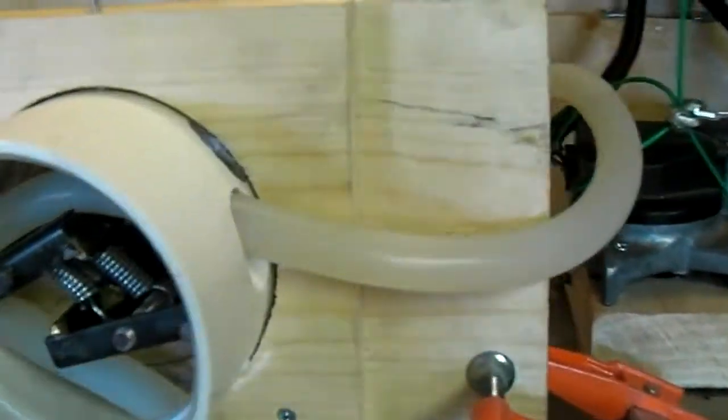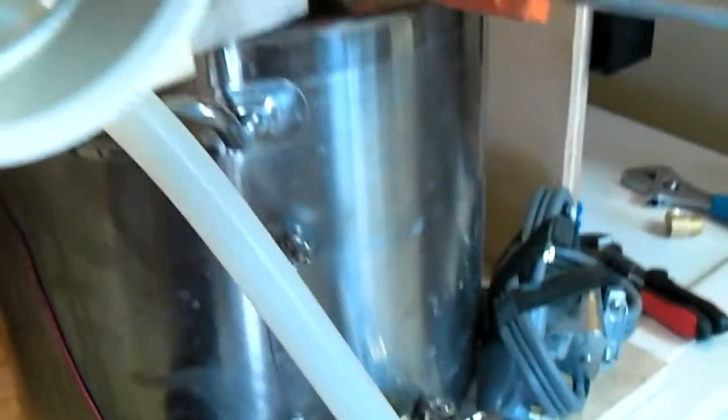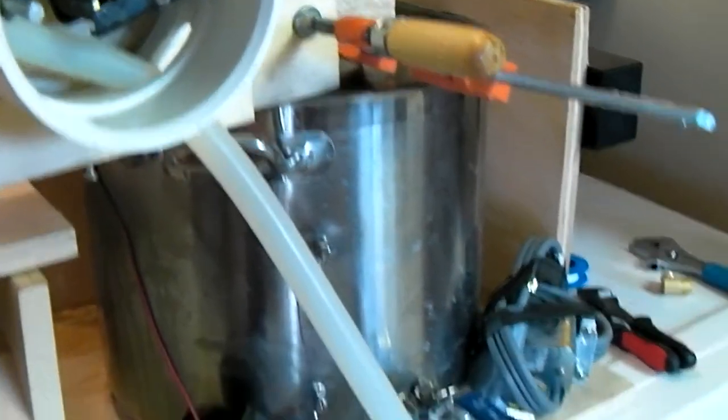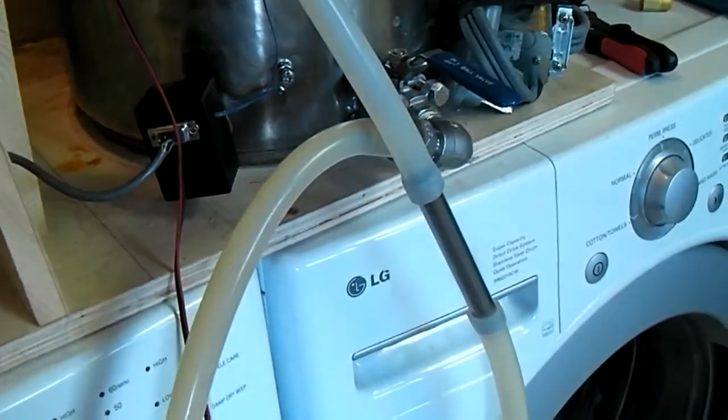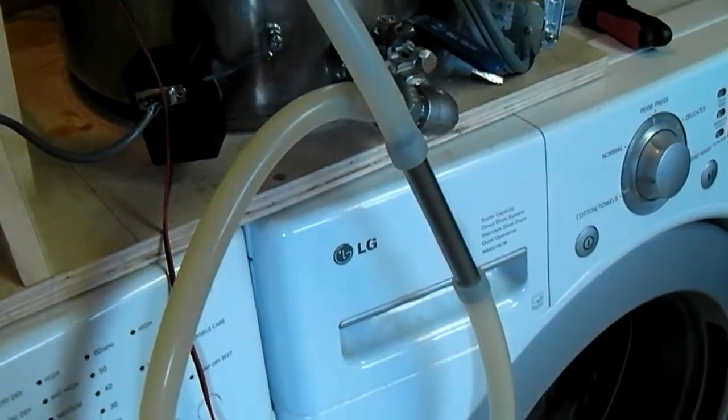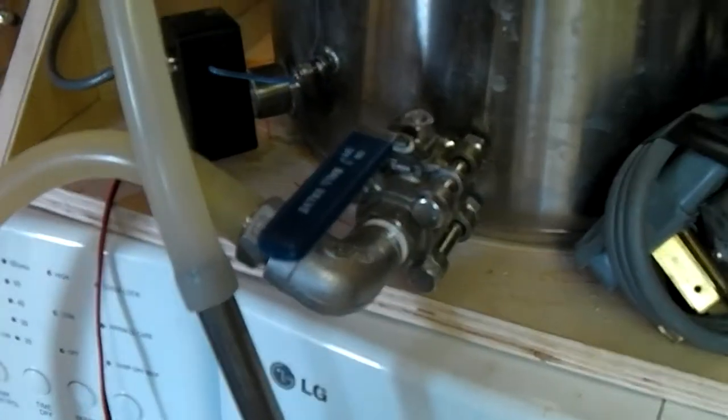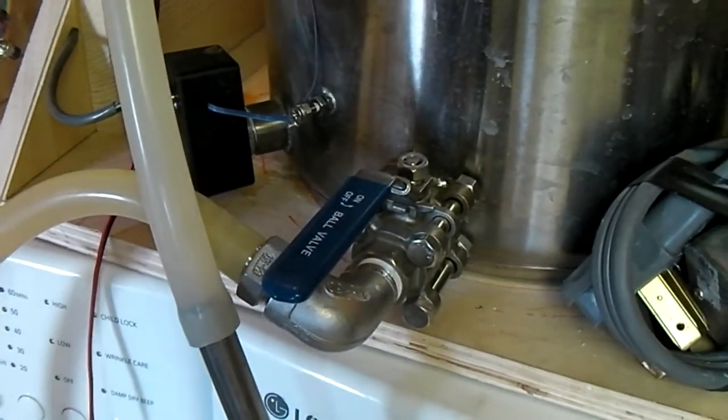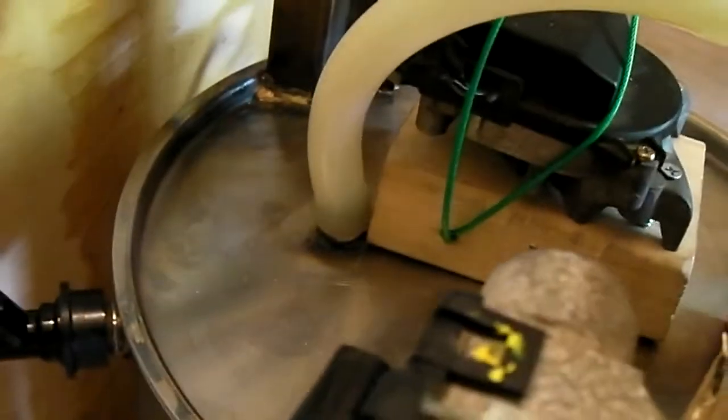So I've just got the pump temporarily clamped to the lid of the pot. Eventually I'll put some more permanent plumbing in place, but since I just want to test to see how it works, I'm just going from the tap of the pot straight into the inlet side of the pump, and the outlet side goes into the top of the pot over there.